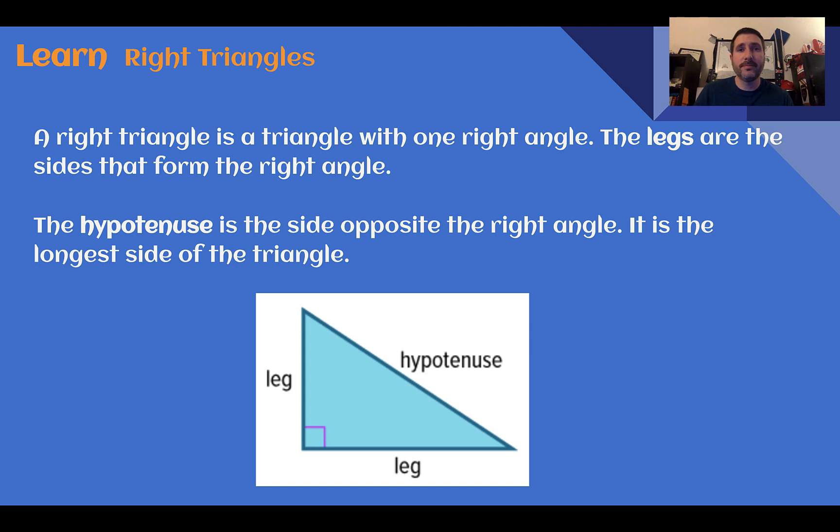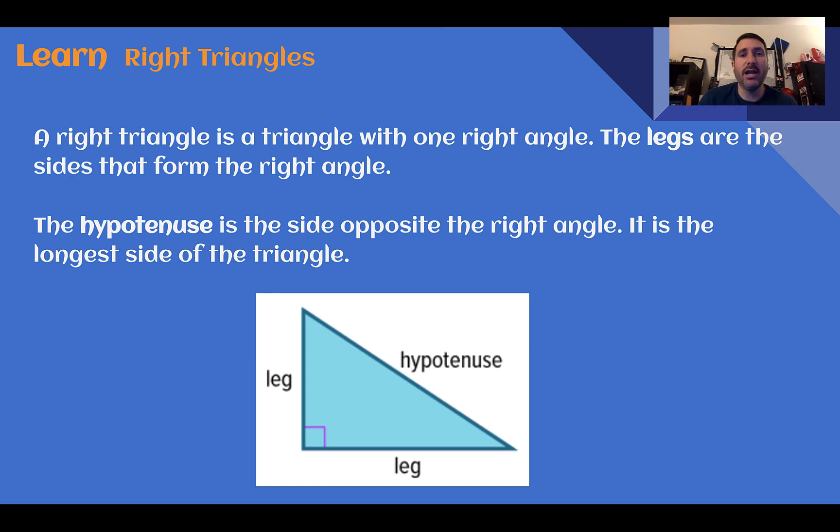Right triangles. A right triangle is a triangle with one right angle. The legs are the sides that form the right angle. The hypotenuse is the side opposite the right angle. It is the longest side of the triangle. So here we have a right triangle where you can see that there's a box in the corner indicating that it's a right triangle. The parts that make the right triangle, those are your legs, and opposite the right angle is your hypotenuse.